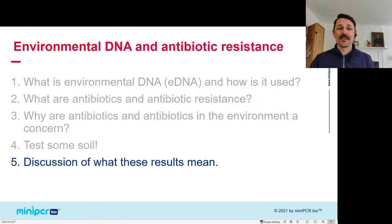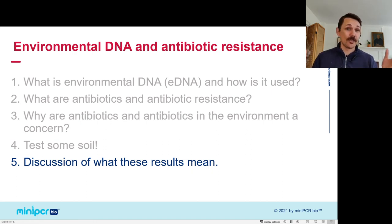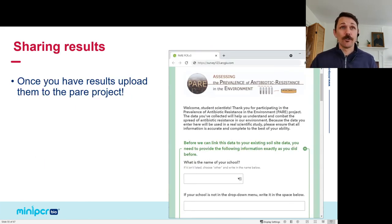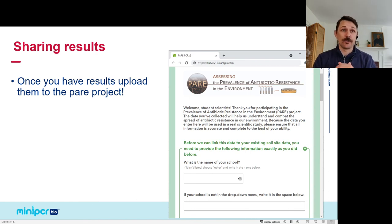So what does that mean? It means I found tetracycline resistance genes in two places spreading in the environment where I go fairly regularly. The first thing we want you to do as part of the PEAR project is to share your results — go to the website, enter your school, your group, all your results, and upload a labeled picture of your gel.